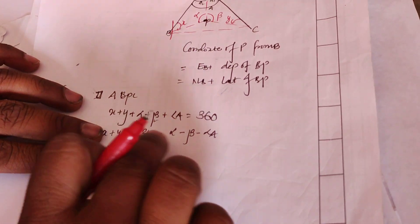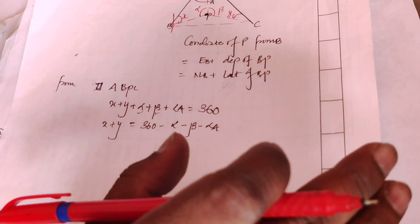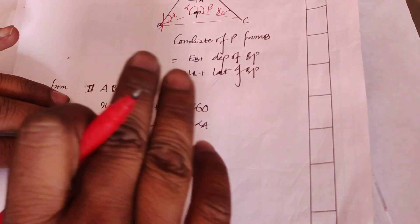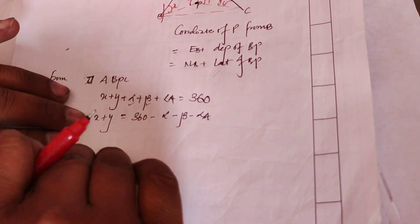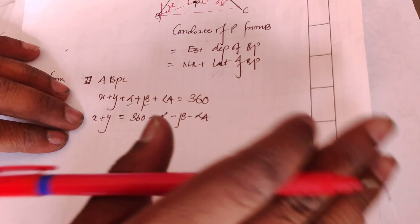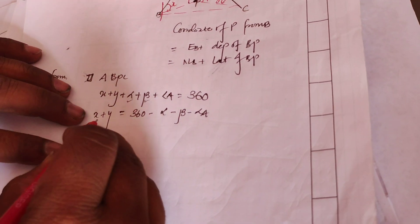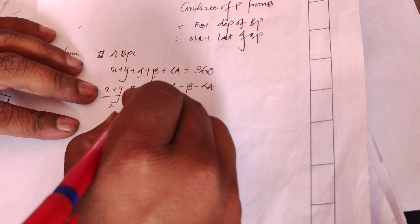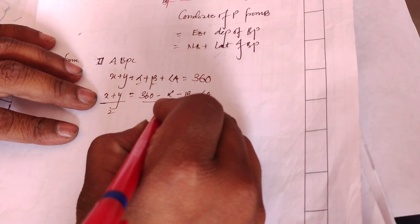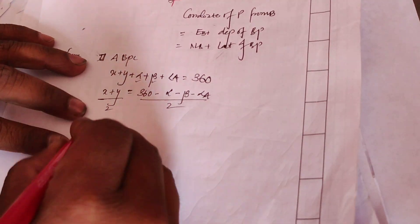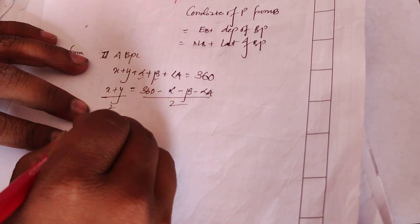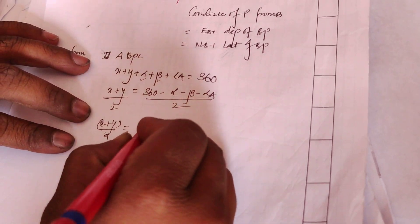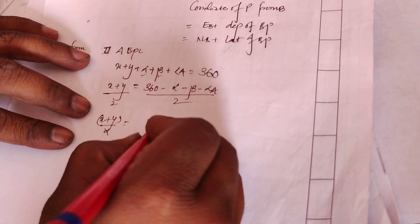At this point, we have to take half of the term, then divide by half. After that, we submit: x plus y is equal to 180 degrees minus something.